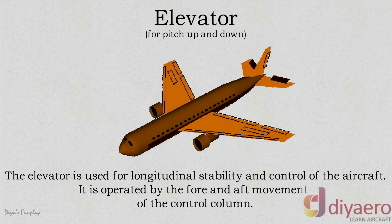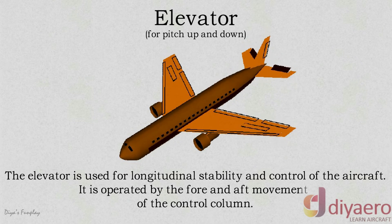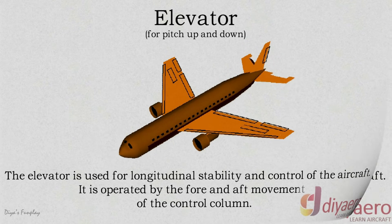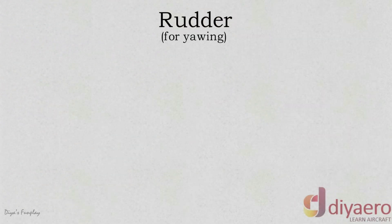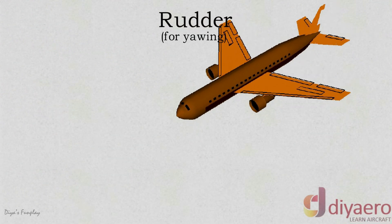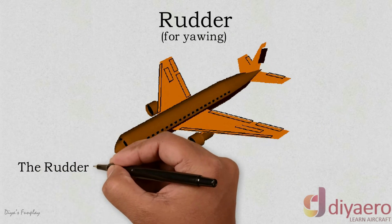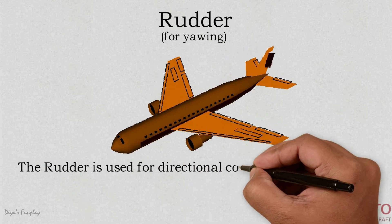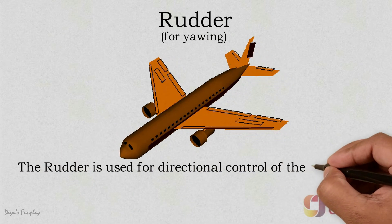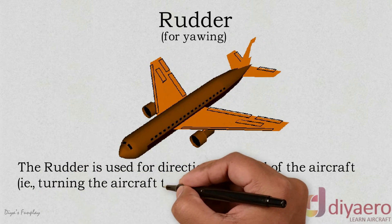Rudder. The rudder is hinged to the rear of the vertical stabilizer. By pushing the left pedal, the rudder will move left. This alters the fin rudder airfoil section and sideways lift is created that sends the tail to the right.